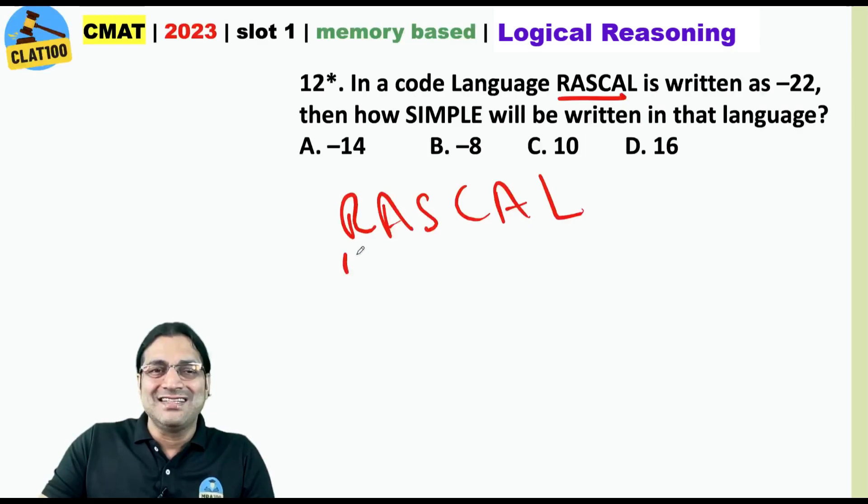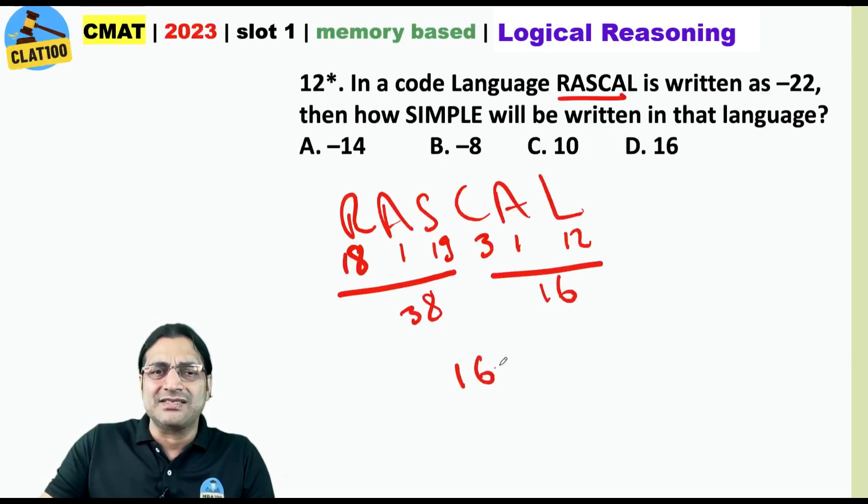So let us see. This is the 18th letter. Right. 1. This is the 19th letter. 3. 1 and the 12th one. What is the sum of these three? 18, 1 and 19? This is 38. And sum of these three? 16. And 16 minus 38 is minus 22. This is one of the reasons.